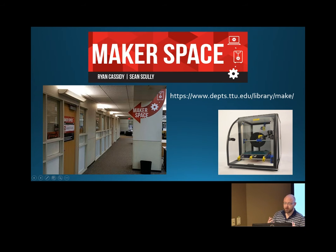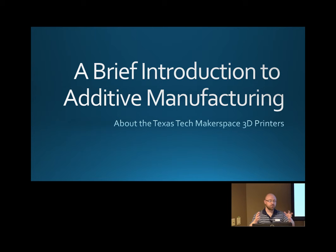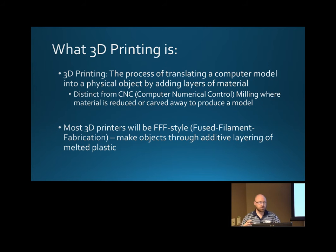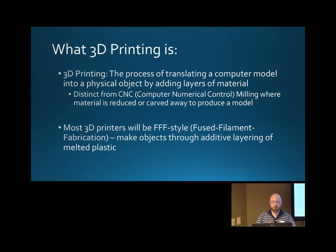In this presentation I have some links to different things people have done with 3D printing, but we'll skip through those for time. When you think about 3D printing, it falls under the umbrella of additive manufacturing — you're making something by building up layers and layers of material. This is versus CNC milling, which stands for computer numerical controlled milling, where you tell the machine to carve away from a big block. That's a reductive process; what we're talking about today is additive.